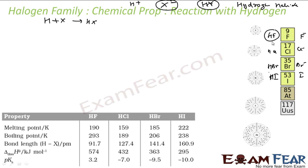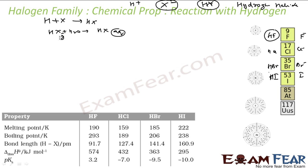HF has extra stability because of hydrogen bonding. When HX reacts with water, you get hydrohalic acid — that is HX in aqueous form. HX in gas form is called hydrogen halide; when dissolved in water it is called hydrohalic acid.